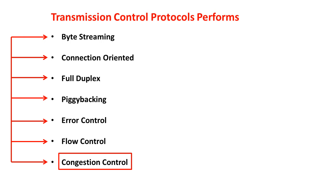TCP not only takes care of the receiver end capacity, but also controls congestion in the network through which the data packet will be passed. The major application layer protocols that rely on TCP include the World Wide Web, email, remote administration, FTP, SSL, and many more where data reliability is most significant. Unlike UDP, TCP does not support real-time communication like live audio and video streaming.